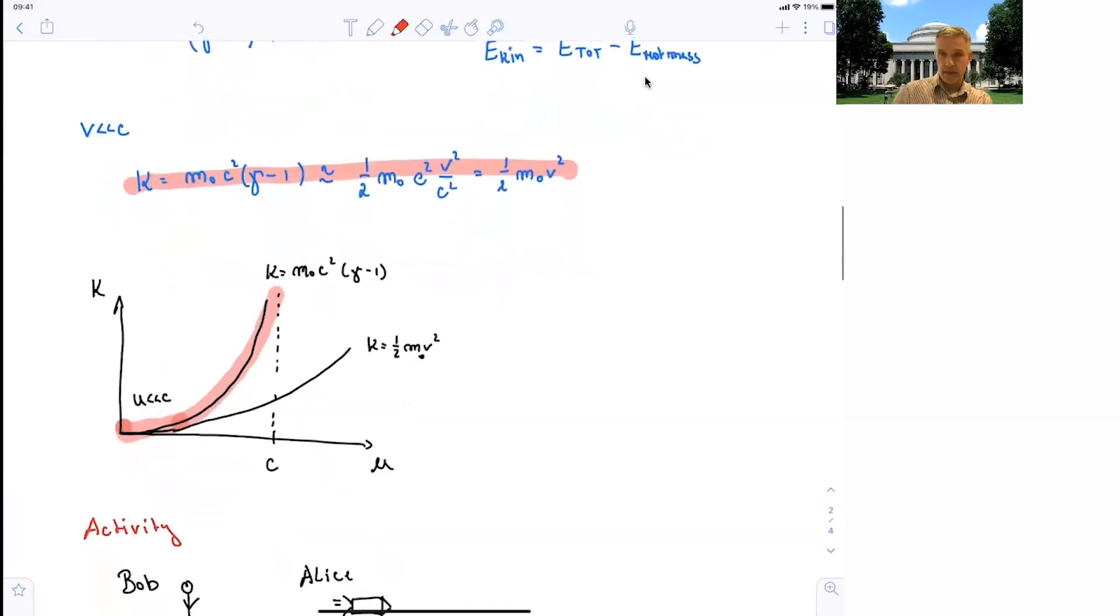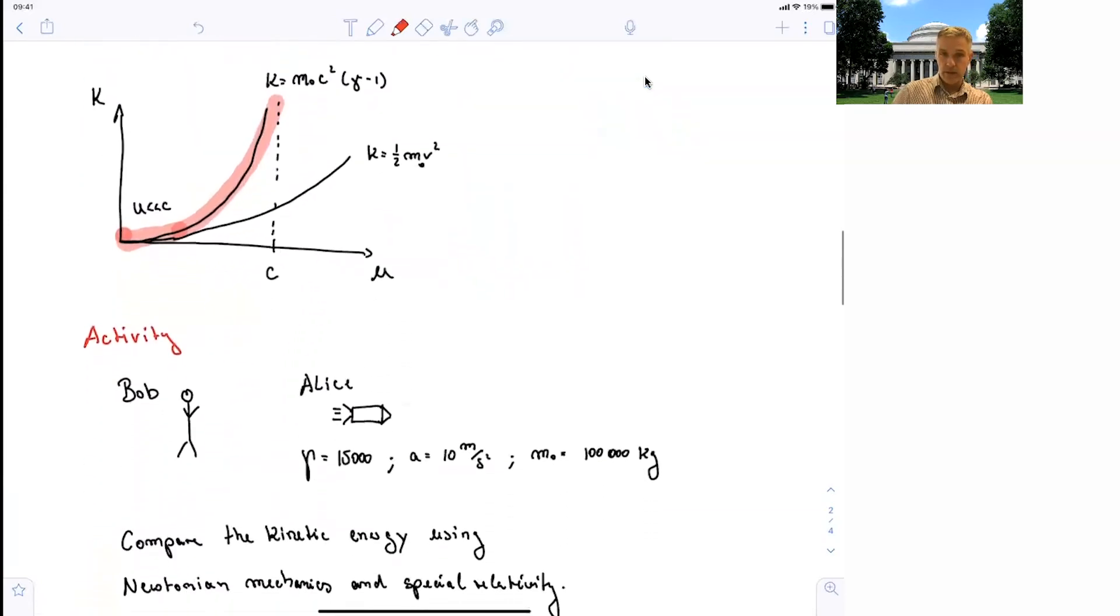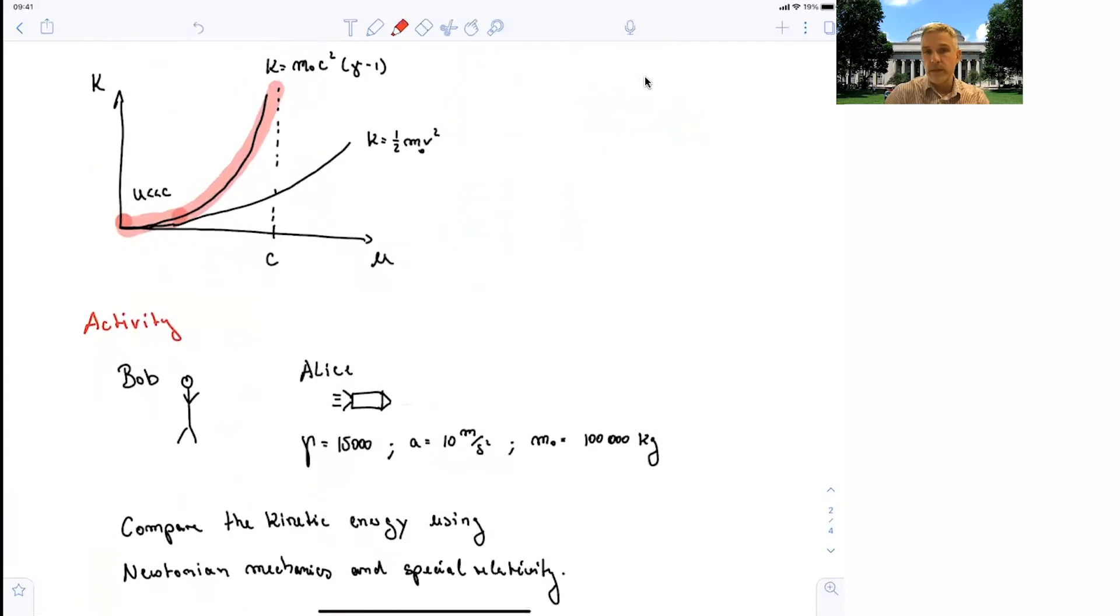Just to get a quantitative example, I asked you to do another calculation here. I want you to reinvestigate Alice's journey to the center of the galaxy, where she has a spacecraft which moves with a gamma factor of 15,000, an acceleration of 10 meters per second squared, and the mass of the spacecraft is 100 metric tons or 100,000 kilograms. So compare the kinetic energy using Newtonian mechanics or special relativity.